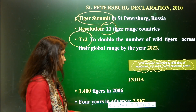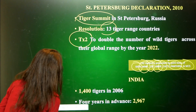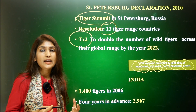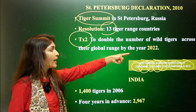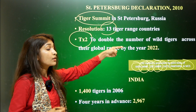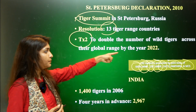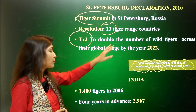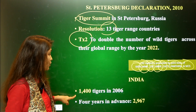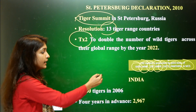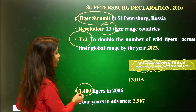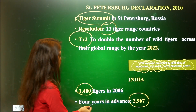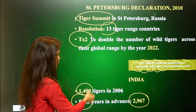India achieved this resolution ahead of schedule. The target year was 2022, chosen because it is the tiger year in the Chinese calendar. India grew from 1,400 tigers in 2006 to approximately 2,967 — more than double — and achieved this four years before the 2022 deadline.